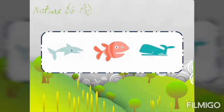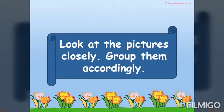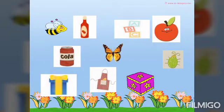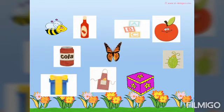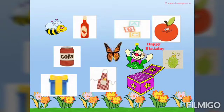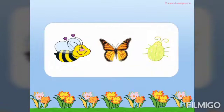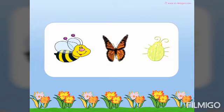The next pictures are pictures of fishes. Look at the pictures closely class. Group them accordingly. So there are many pictures. We have bee, battle, alphabet, apple, can, butterfly, bag, gift, apron, and box. The first sets are bee, butterfly, and bag.